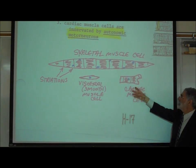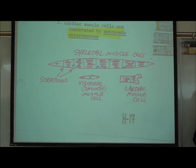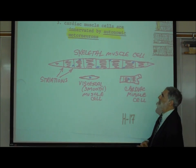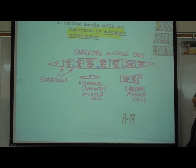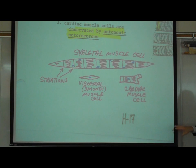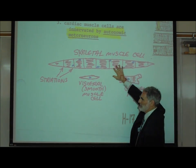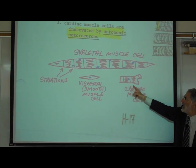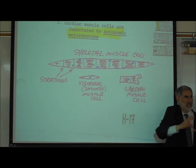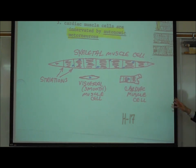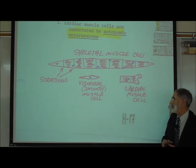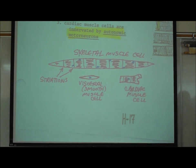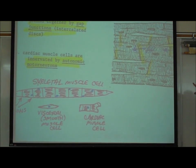Cardiac muscle cells are a little bit bigger than visceral smooth muscle cells, but still much smaller than a skeletal muscle cell. They have one nucleus in each cell, like most normal cells, but they do have some lines or striations — pictures here show that.